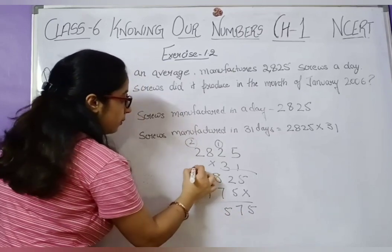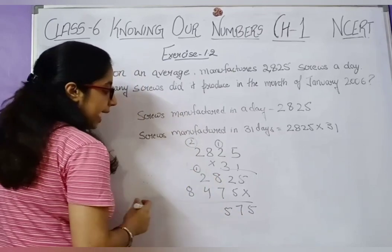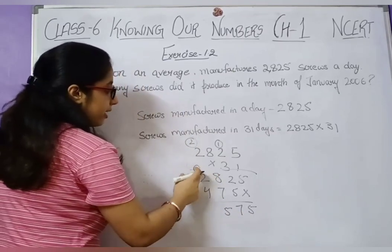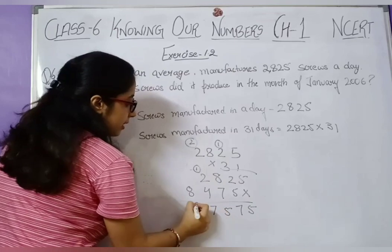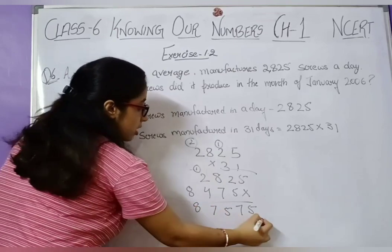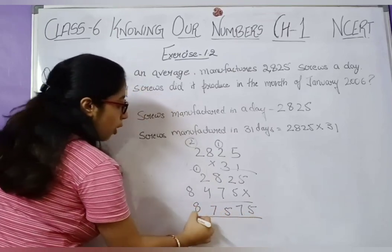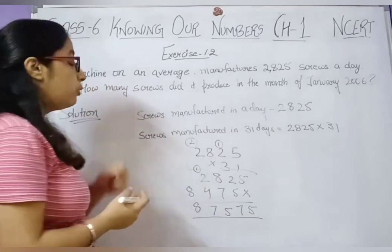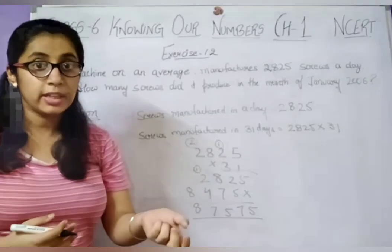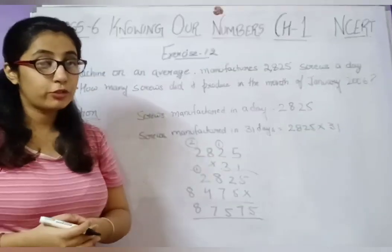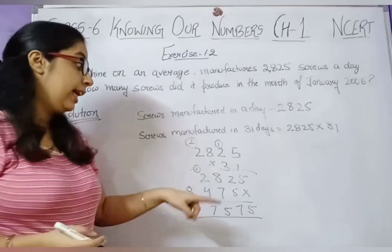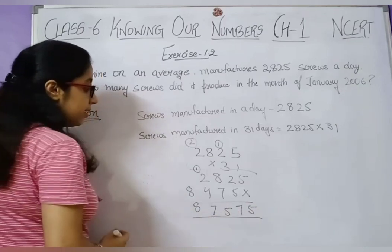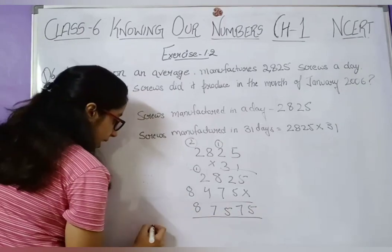Adding the two rows: 5 plus 0 is 5; 2 plus 7 is 9; then carry gives 5; then 7; then 8. So the machine will manufacture 87,575 screws in the month of January.